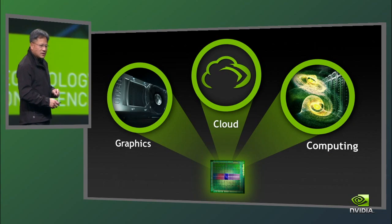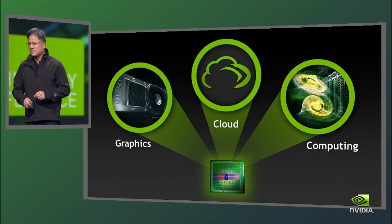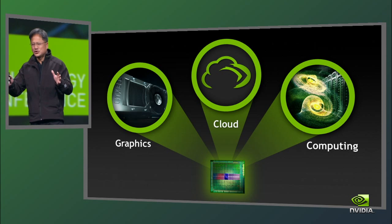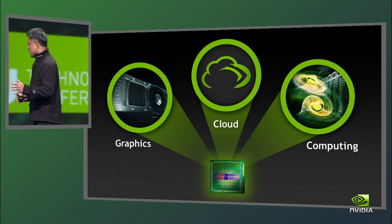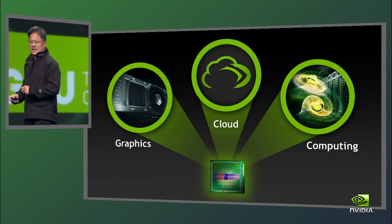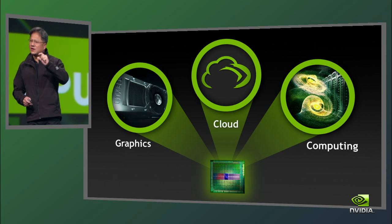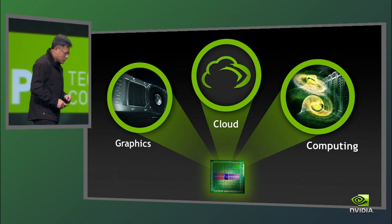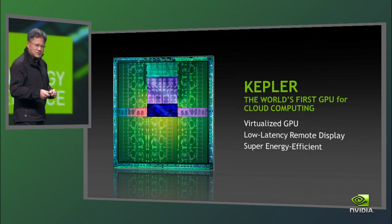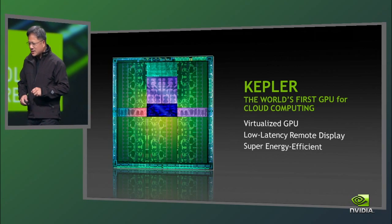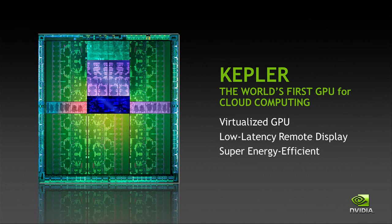Today, we're going to take the GPU into the cloud. This is an endeavor we've been working on for five years — engineers from all over our company working in small pieces, and finally we've been able to put it all together. Kepler, it turns out, has even more secrets than we thought. Kepler is the world's first GPU designed for the cloud, the world's first GPU we can deploy into cloud data centers all over the world. There are three capabilities of Kepler that are important to make this possible.